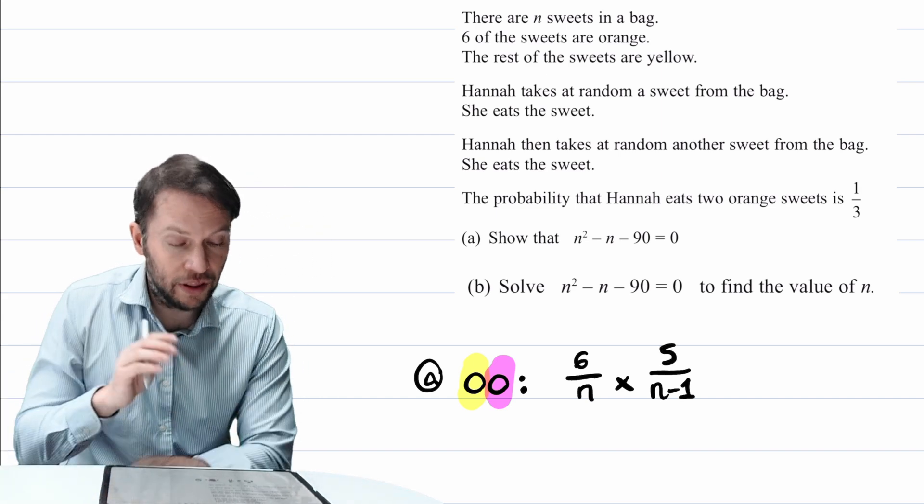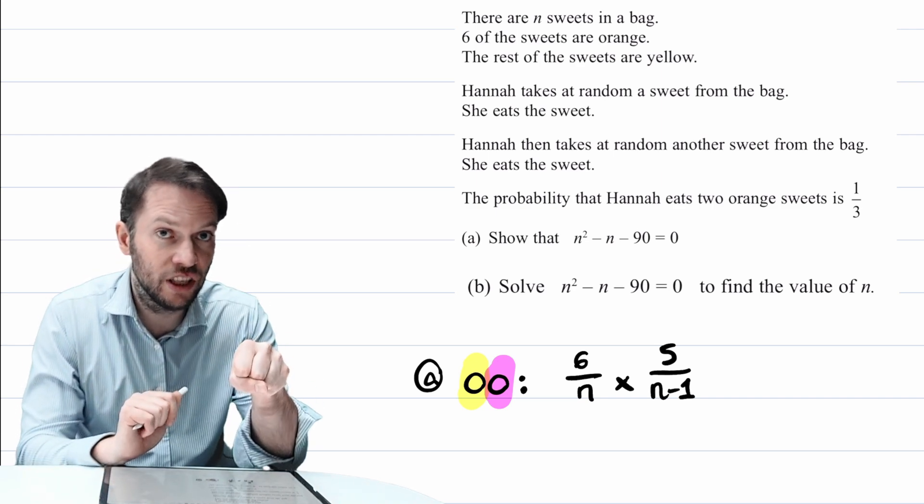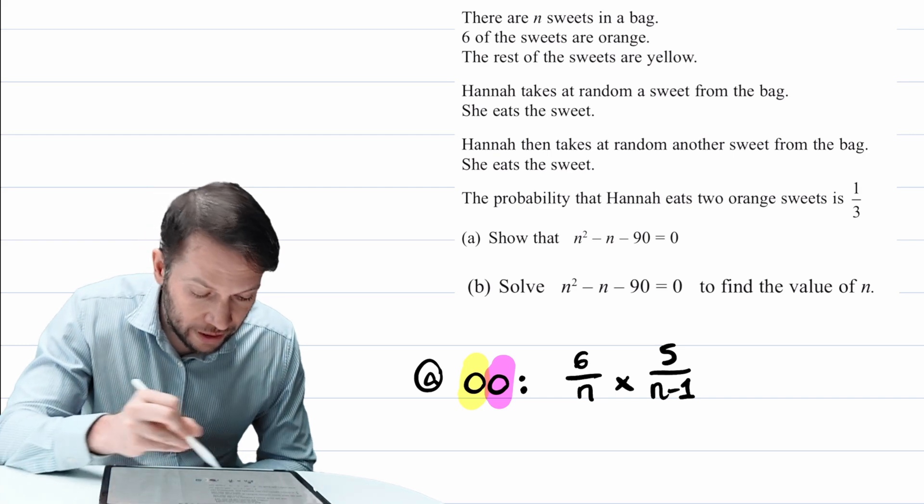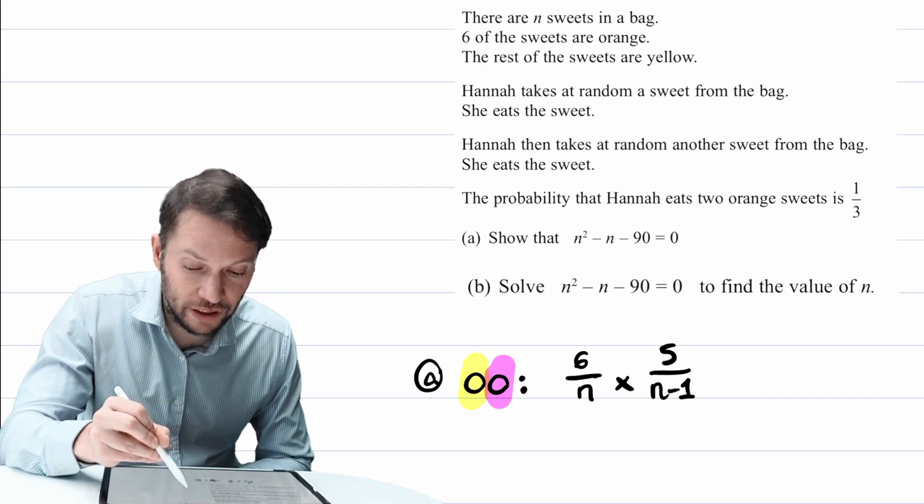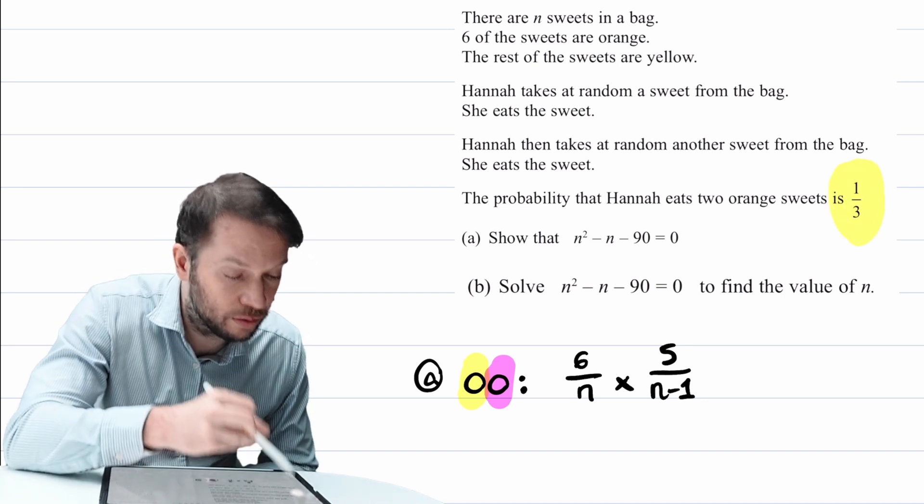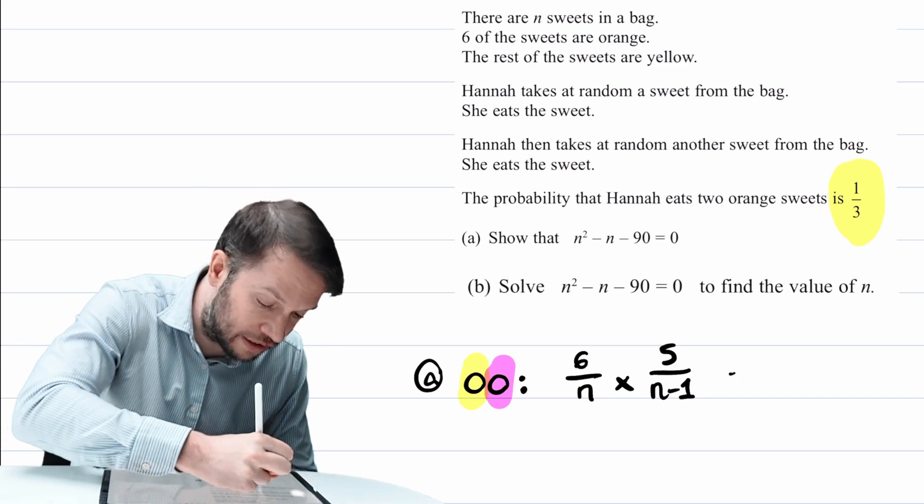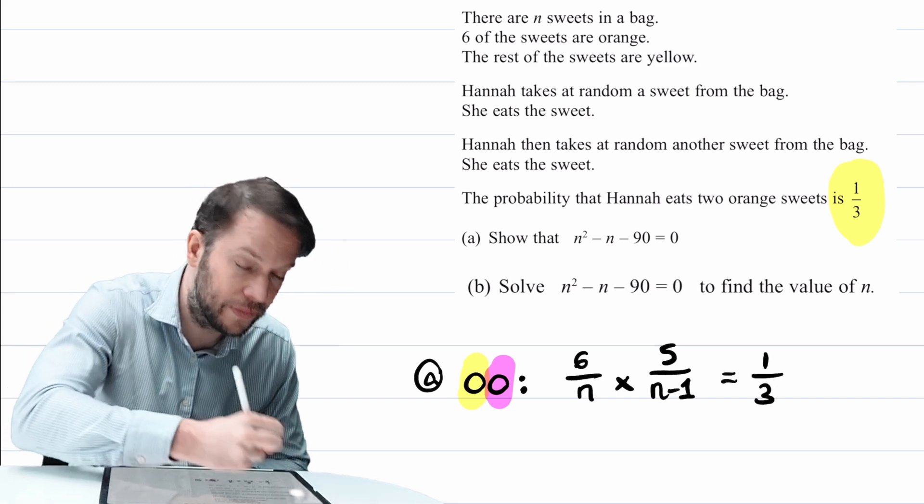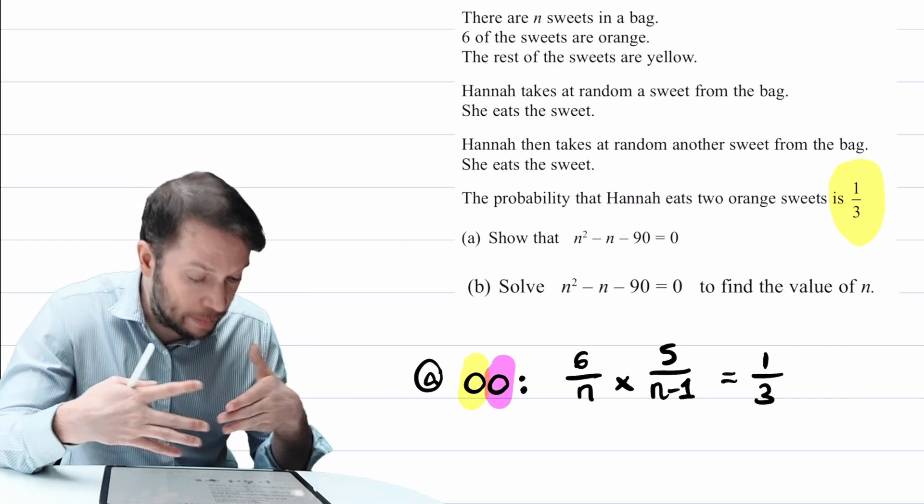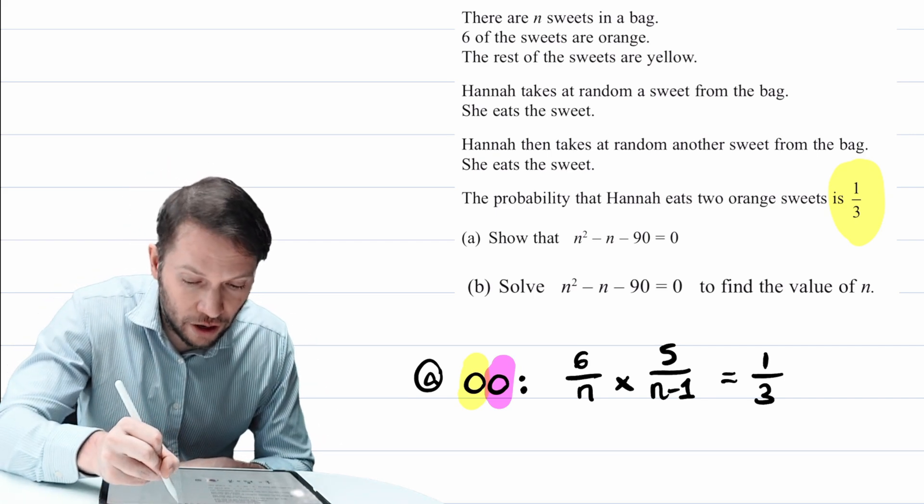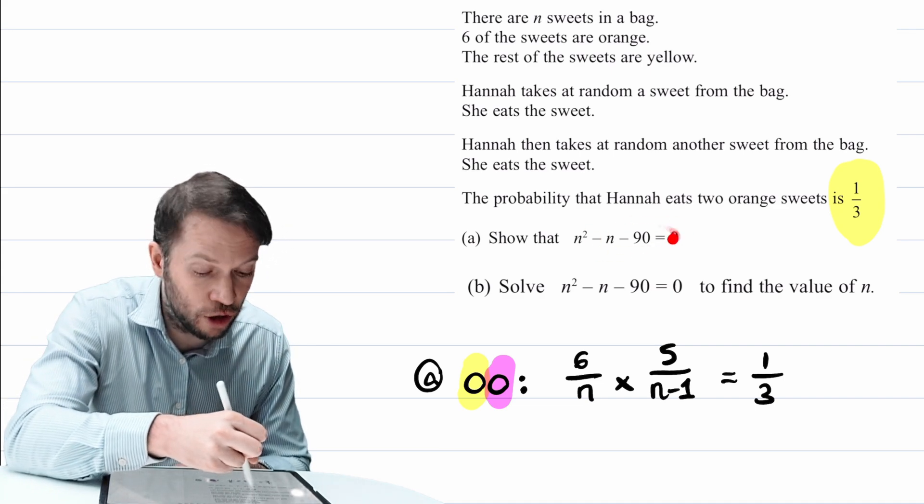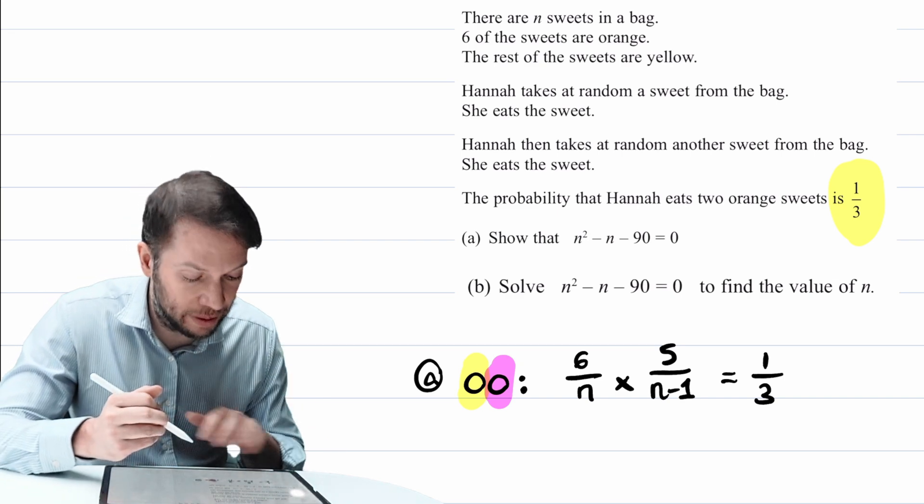And as I said, to find the probability of a sequence of events, so the first sweet is orange, and then the second sweet is orange, we're going to multiply these probabilities together. Now, we're told in this question that the probability of eating two orange sweets is a third. So we can set this equal to a third. At this stage, we've done all the probability bit, and we've just got to kind of simplify this equation here in the hope that we're going to get this equation here, and that we've showed that we can get that equation from the information that's been provided.